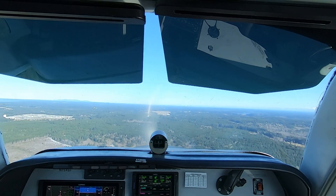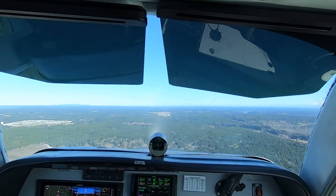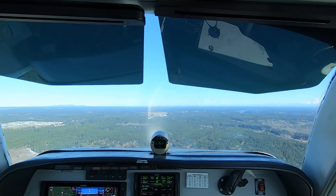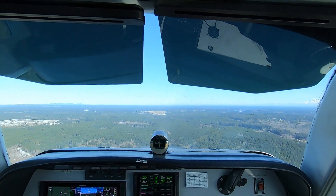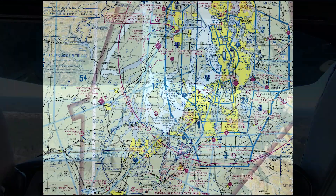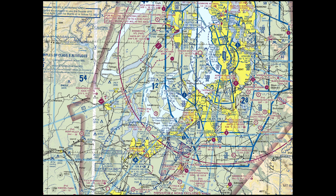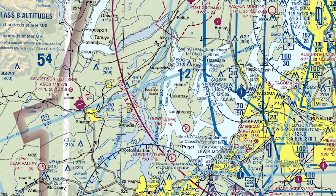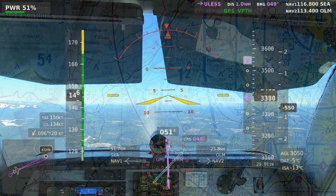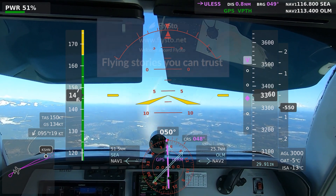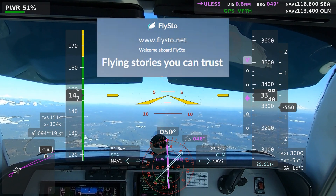On a nice winter day, I exercised the A-36 by flying a VFR practice R-Nav runway 05 approach to Sanderson Field at Shelton, Washington, southwest of Seattle. This flight was a first test of the data capture and replay features of the free online service Flystow.